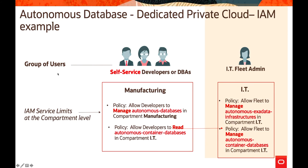Another IAM example involves users across two departments — manufacturing and IT. For manufacturing, developers are allowed to manage autonomous databases in the manufacturing compartment and read autonomous container databases in the IT compartment. Fleet admins manage autonomous Exadata infrastructure and autonomous container databases in the IT compartment. This way, based on different roles, you can write the appropriate policy statements.